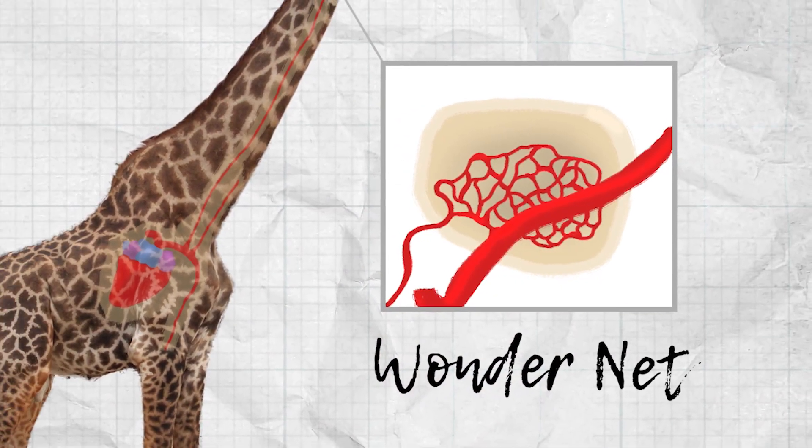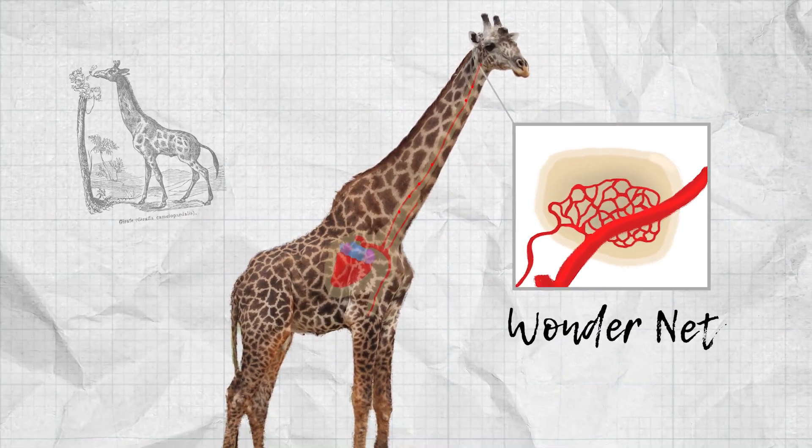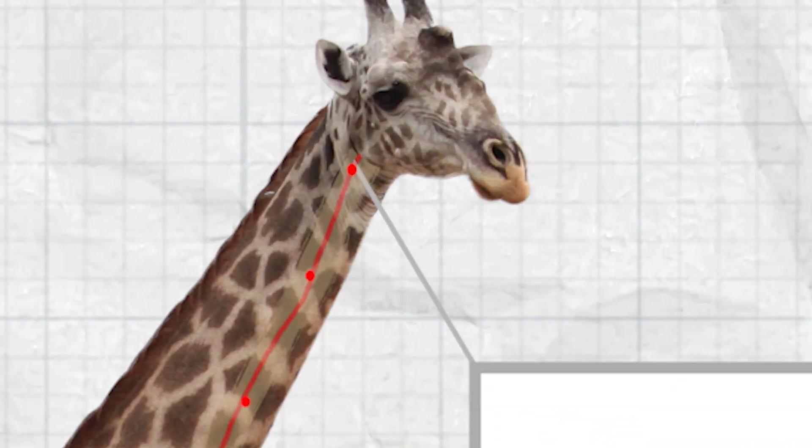At the base of their brain they have a tiny mass of blood vessels called the wonder net. That wonder net catches the blood and diffuses it to the brain at just the right rate so they don't have a stroke and die.